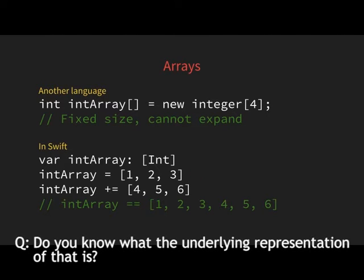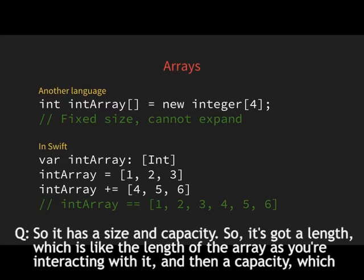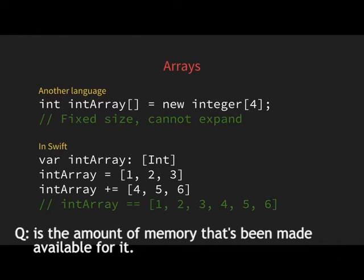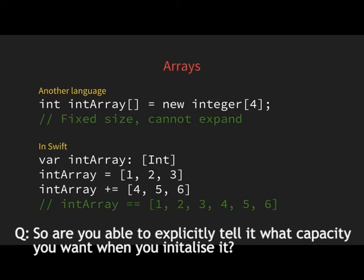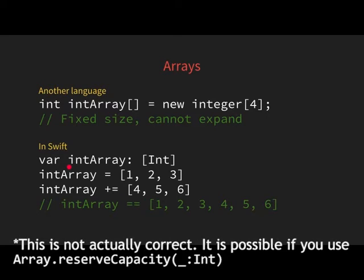In Swift, arrays are stored contiguously. An array will have a capacity, and if you fill it to that capacity it will expand itself, but it will always be stored contiguously. It has a length — the current length you're interacting with — and a capacity, which is the amount of memory being made available. You cannot explicitly set the initial capacity when you initialize it.